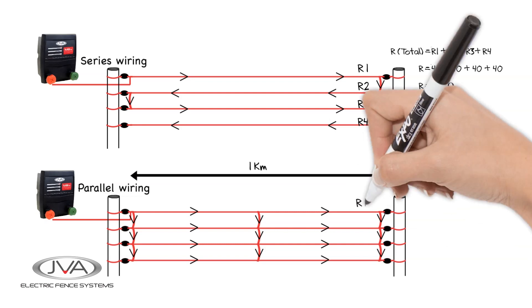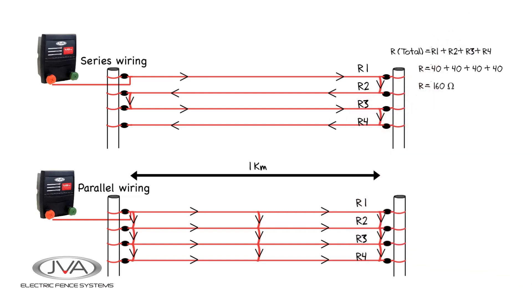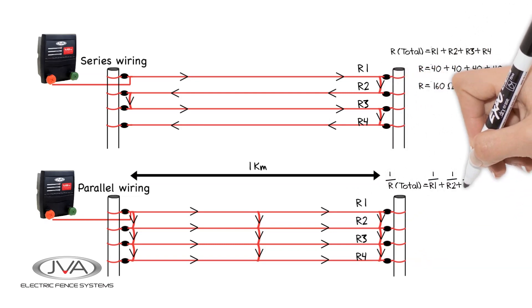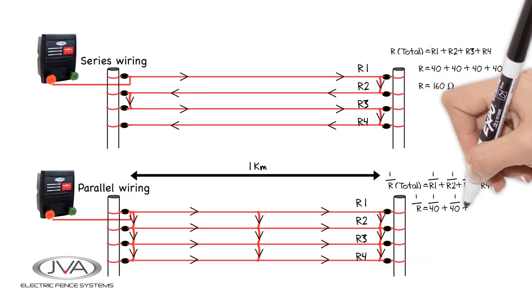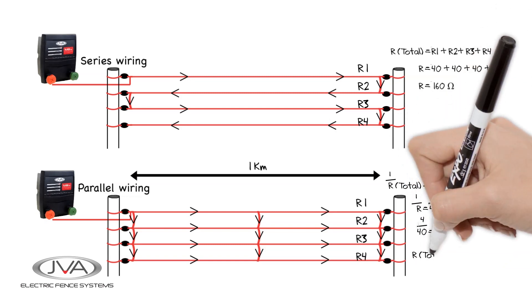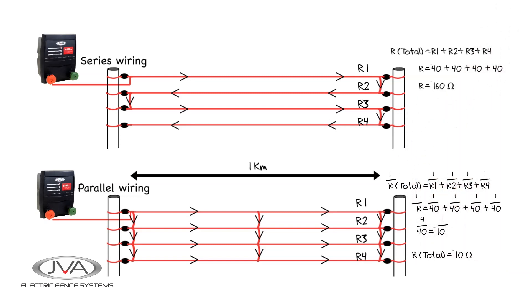In comparison, the 1 km parallel wired fence, where the load is shared over 4 lines, this makes it a fraction, and thus the equation will look like this. And the resistance will be 10 ohms.